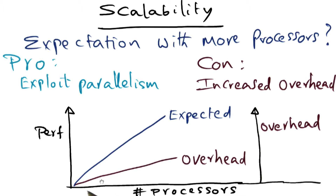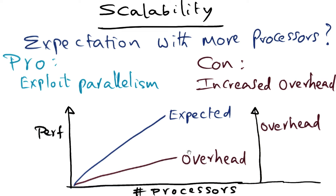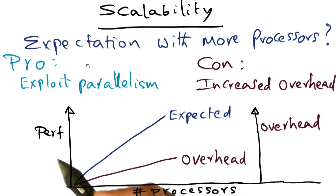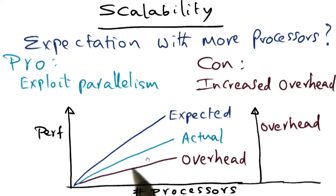This increased overhead also grows. As you increase the number of processors, more overhead is going to be incurred by the system. If you have an eight-processor SMP, the overhead for cache coherence is less than if you have a 16-processor SMP, or a 32-processor, or a 64-processor. So the overhead is going to grow. As a result, you have the pro of exploiting parallelism, but you have the con of increased overhead, and you end up with an actual performance that's somewhere in the middle between your expectation and the overhead.